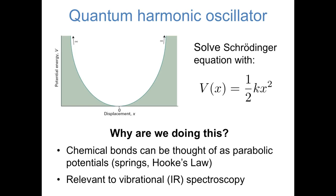The particle in a box and the quantum harmonic oscillator are focusing on two different types of motion of atoms and molecules. Remember that the particle in a box focuses on translational motion — the motion of an atom moving around a container or an electron moving around inside a molecule. But the harmonic oscillator is focused on vibrations, the vibrational energies of a diatomic molecule as the two atoms vibrate back and forth as if they're attached by a spring.